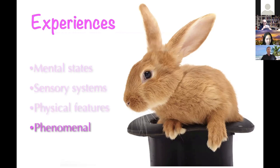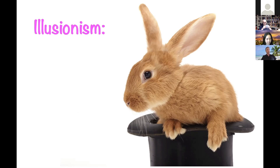Explaining phenomenal consciousness is perhaps the hard part of the hard problem of consciousness. Illusionism proposes that there's no such thing as phenomenal consciousness. Instead, your belief in phenomenal consciousness is an illusion — a magic trick played on you by your brain. It's like pulling a rabbit out of a hat.